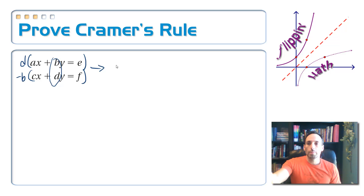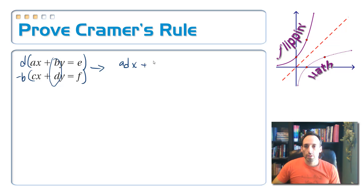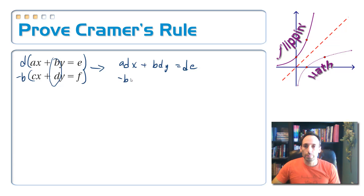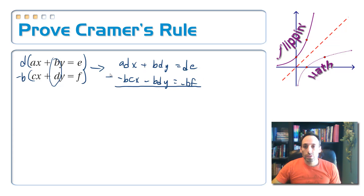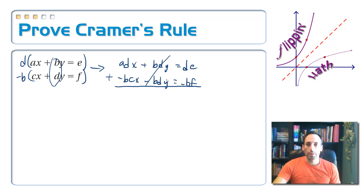Whenever I multiply by d across the top, I get adx plus bdy equals de. For the second equation, I get negative bcx minus bdy equals negative bf. Now, whenever I add these two equations together, the y's eliminate — they cancel out.